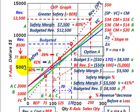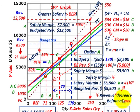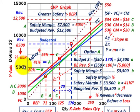Our safety margin in dollars is $3,500 — we can go down from $8,500 by as much as $3,500 before we reach the $5,000 break-even point, where revenues equal costs. Anything below that, our costs would be greater than our revenues and we'd be at a loss. For our safety margin percentage, you take that safety margin of $3,500 and divide it by the budgeted revenues of $8,500, which gives us 41%. This is the percent of revenue that you can decrease before you have a loss, and it's the amount by which the budgeted revenues exceed break-even revenues.